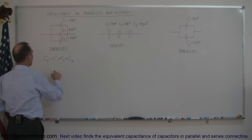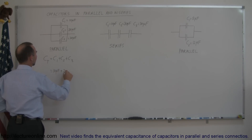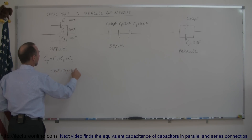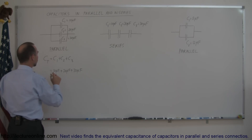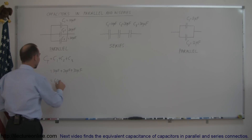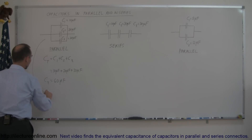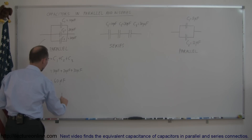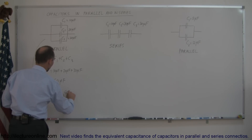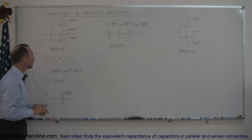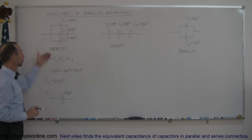In this example, capacitor one is 10 microfarads, the second is 20 microfarads, and the third is 30 microfarads. You simply add them together, so the total capacitance is 60 microfarads. In other words, you could replace the circuit with a single capacitor of 60 microfarads — these two circuits are electrically equivalent.